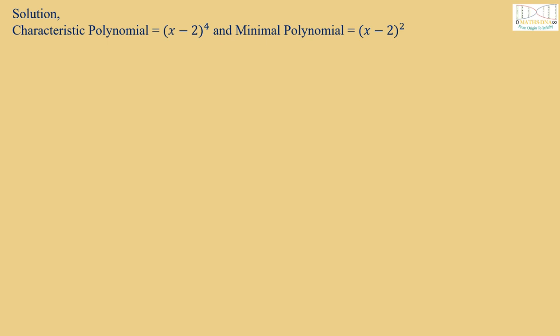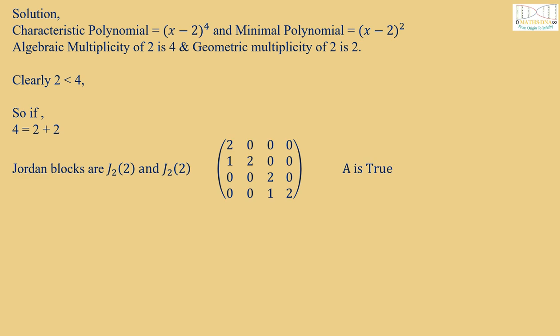Given characteristic polynomial equals (x-2)⁴ and minimal polynomial equals (x-2)². The algebraic multiplicity of 2 is 4 and geometric multiplicity of 2 is 2. Clearly, geometric multiplicity is less than the algebraic multiplicity. So we need to equate it. So if 4 = 2 + 2, then Jordan blocks are J₂(2) and J₂(2), represented as the given matrix. Hence option A is true.